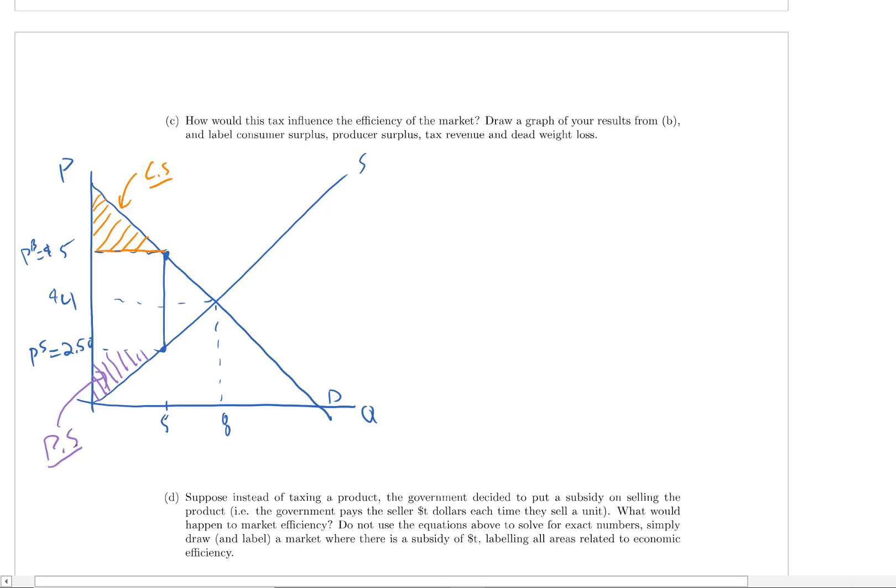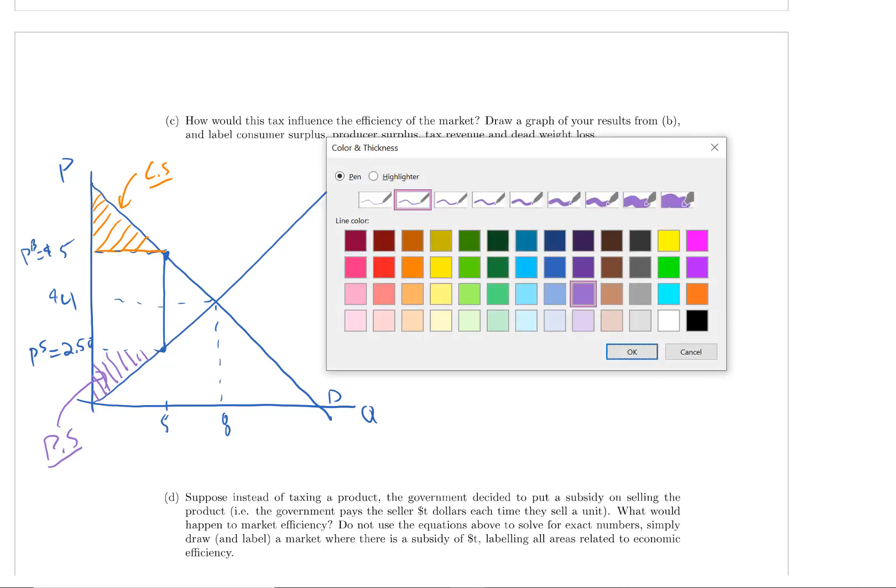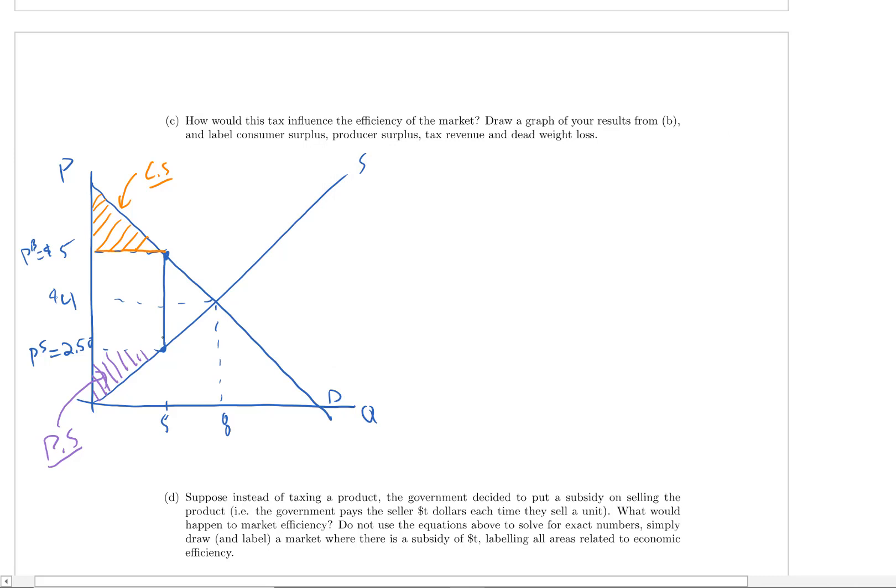Next, we're going to imagine the government uses all their government revenues efficiently. And we're going to label tax revenue. We have a tax of $2.50 per pizza. And we're selling five of them. And so that means our tax revenue is going to be this green area right here. The size of the tax, which is the length of this tax wedge, times the quantity we sell, which is five. So this is tax revenue.